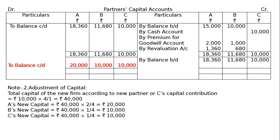For capital adjustment: total capital of the new firm based on C's contribution of Rs.10,000 for 1/4 share gives Rs.40,000. A's new capital = Rs.40,000 × 2/4 = Rs.20,000. B's new capital = Rs.40,000 × 1/4 = Rs.10,000. C's new capital = Rs.40,000 × 1/4 = Rs.10,000. Hence balance carried down is Rs.20,000, Rs.10,000, Rs.10,000.